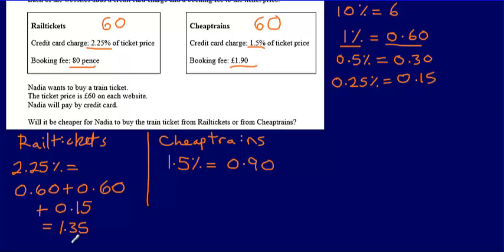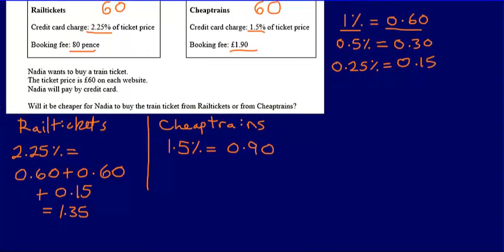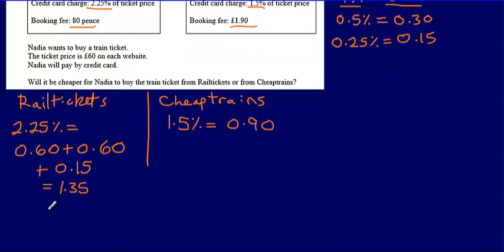So I've worked out the percentage for each. It's £1.35 for Rail Tickets and it's 90p for Cheap Trains. But I then need to add on the booking fee. So the booking fee is going to be 80p for Rail Tickets. And so the total cost of the extra charges is going to be £1.35, the credit card charge, plus the booking fee of 80p. And so in total what I can then say is that this is going to be £2.15. So the total of the extra charges for Rail Tickets is going to be £2.15.